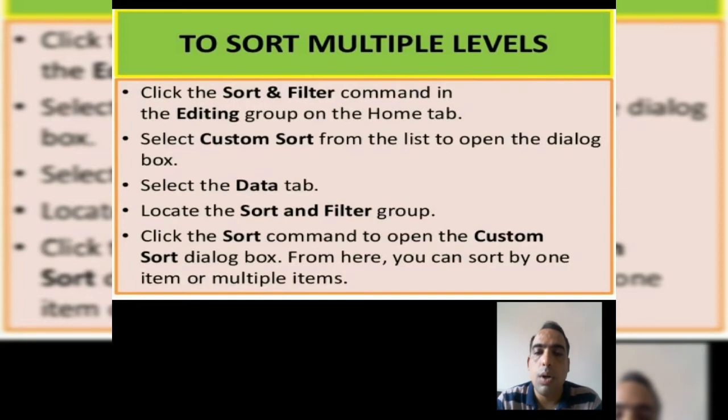Step 4, locate the sort and filter group. Step 5, click the sort command to open the custom sort dialog box. From here you can sort by one item or multiple items also. You can see in this diagram.